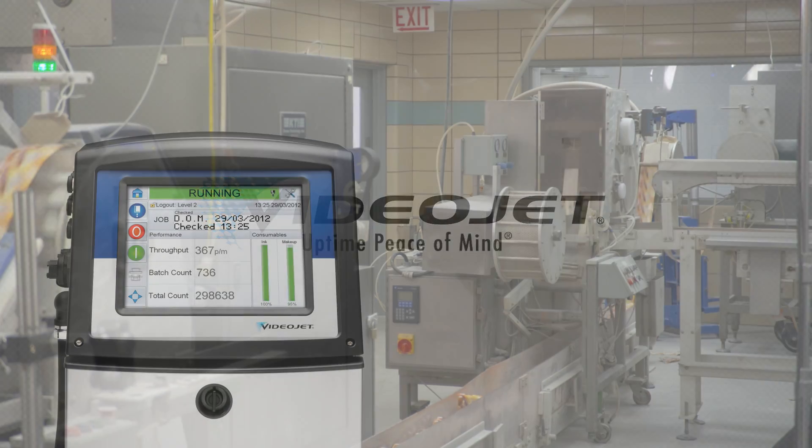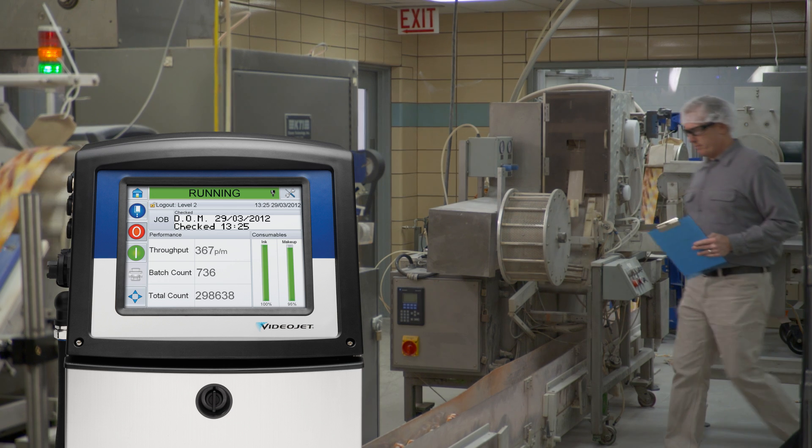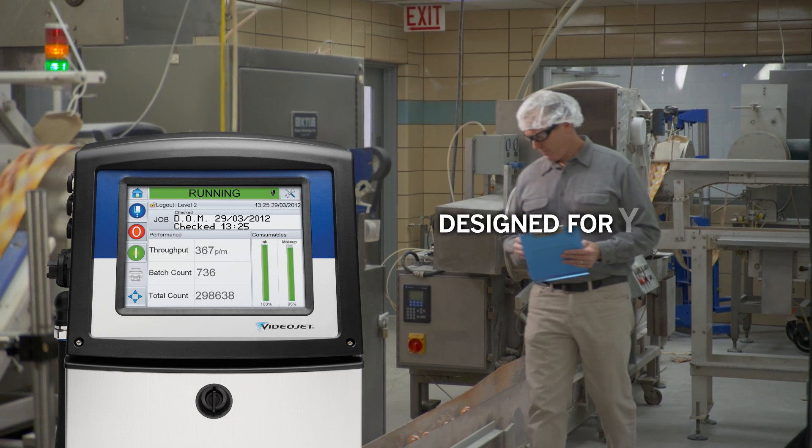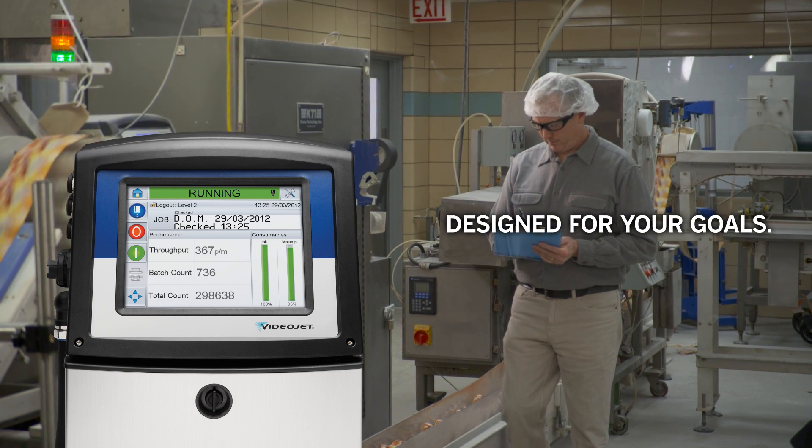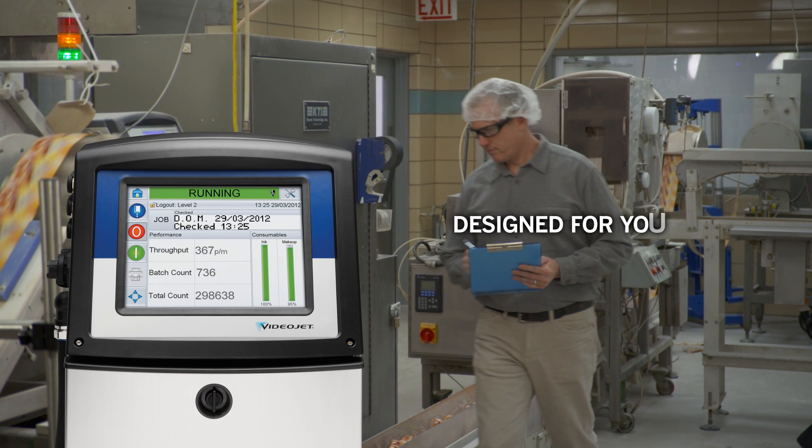The VideoJet 1000 Line Printers with Dynamic Calibration, helping eliminate the biggest obstacles you face in meeting the goals you set for your operation.